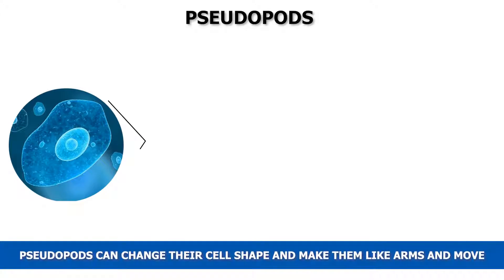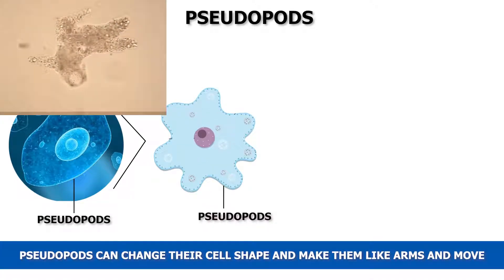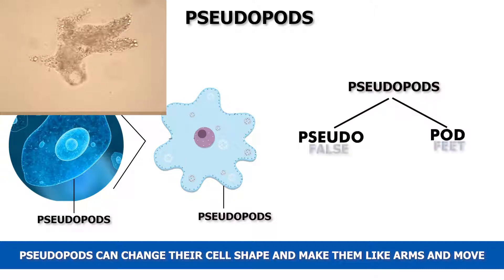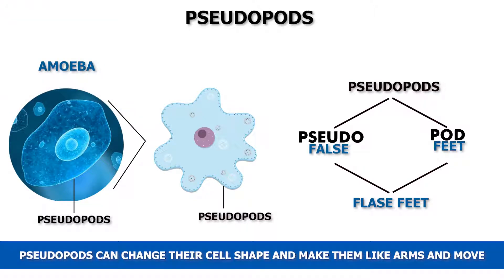Some protozoans change their cell shape and make arm-like structures to move. Such organisms are called pseudopods. Pseudo means false, and pod means feet. So pseudopod means false feet. Amoeba is a pseudopod.